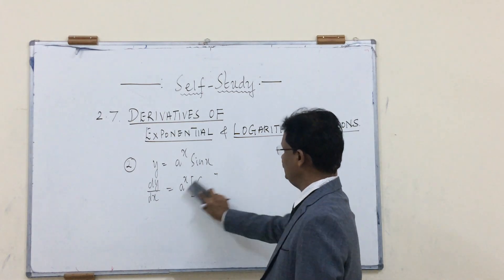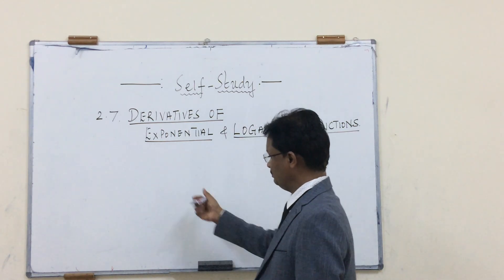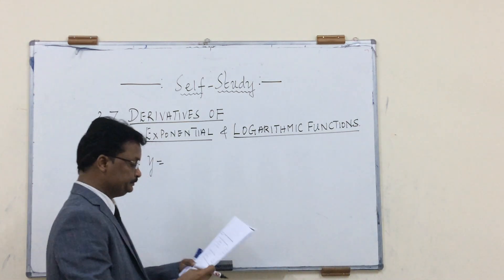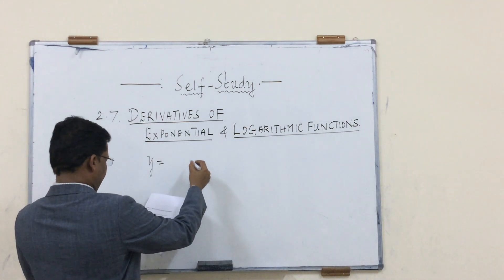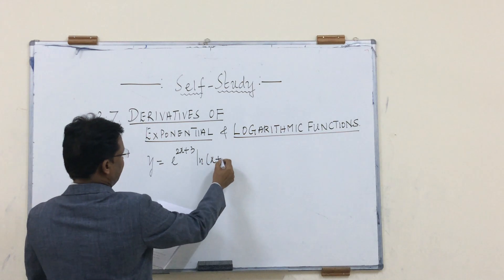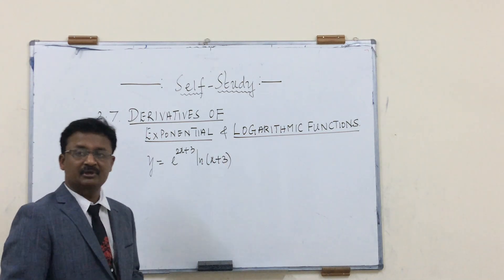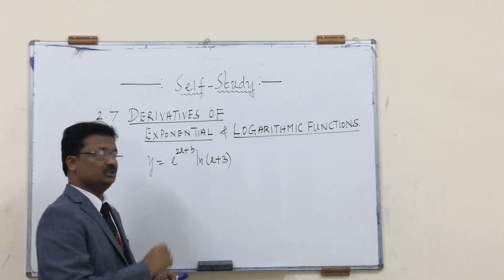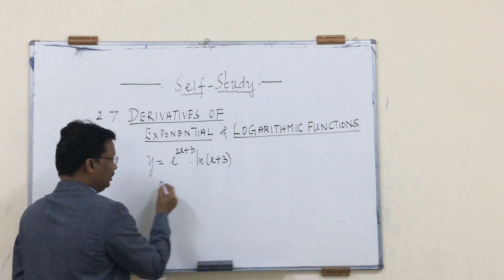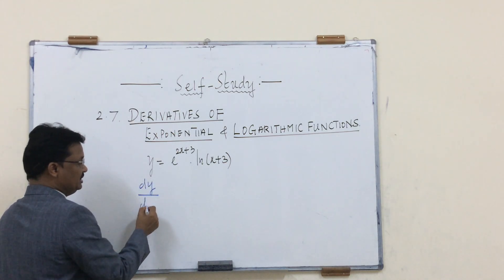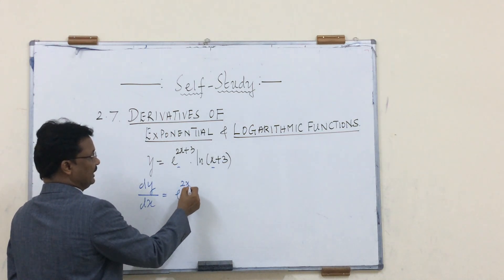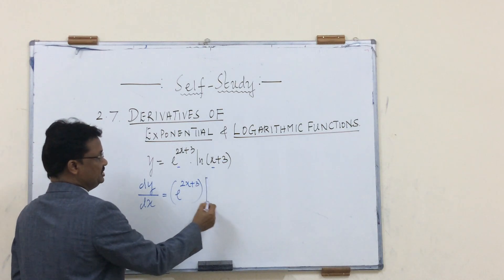Example 3: y = e^(2x+3) · ln(x+3). This is a good example combining an exponential function and a logarithmic function as a product of two functions. We apply the product rule to find dy/dx. Write f as it is and differentiate g, then write g as it is and differentiate f.